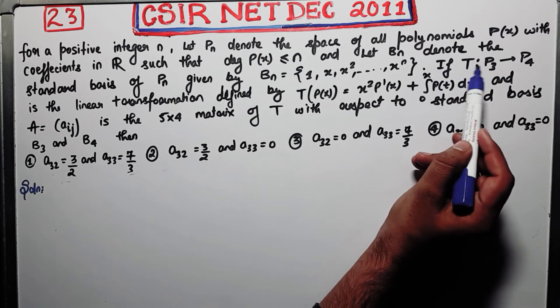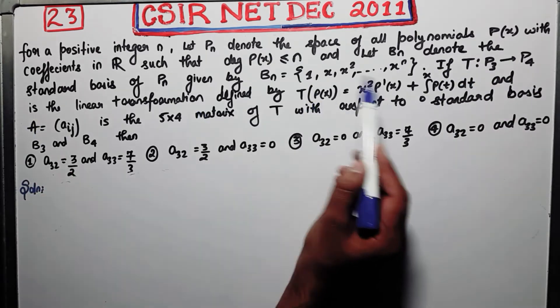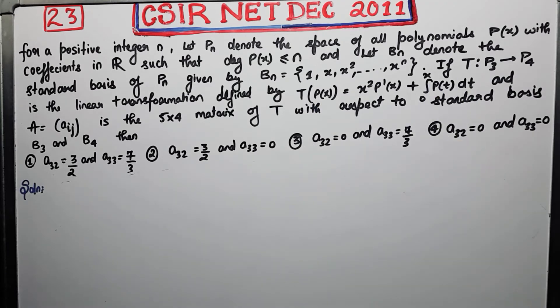Now it says T is a transformation from P_3 to P_4, defined by this formula, and it says A is the matrix with respect to B_3 and B_4. Then you need to find out these values.